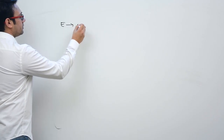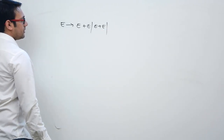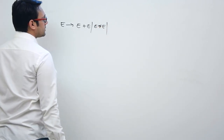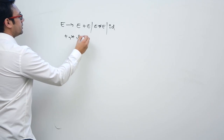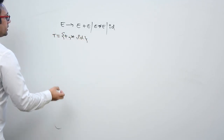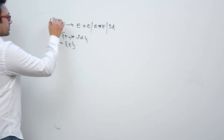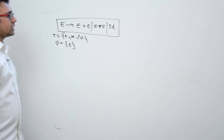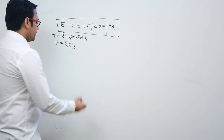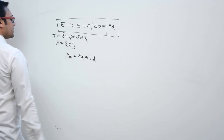Assume we have the following grammar: E can derive E plus E, E star E, or ID. Here, plus, star, and ID are the set of terminals. The variable and start symbol is E. Now for this given grammar, consider the string ID plus ID multiplied by ID. Is there any string for which we can have two different parse trees? Let us check.